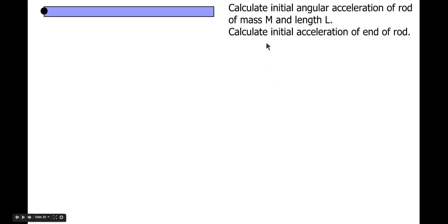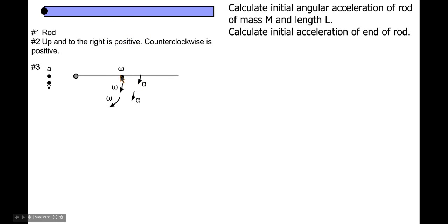In another example, we can calculate the initial angular acceleration and initial linear acceleration on the end of the rod, so this end of the rod. We'll follow our steps again. The rod is what we're accelerating. Up to the right is positive, counterclockwise is positive. We don't expect the object to be moving linearly, only rotationally. So rotationally, it's going to have a rotational velocity in that direction and a rotational acceleration in that direction.